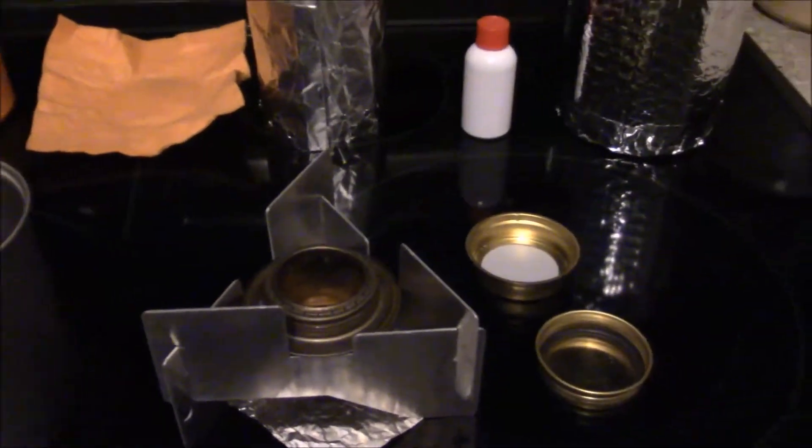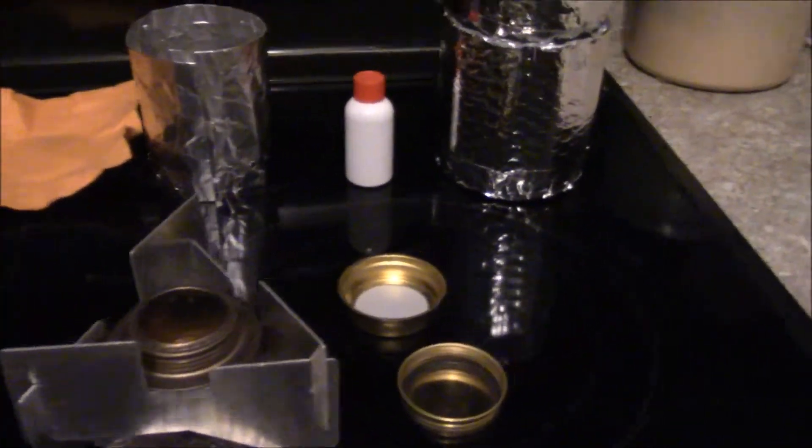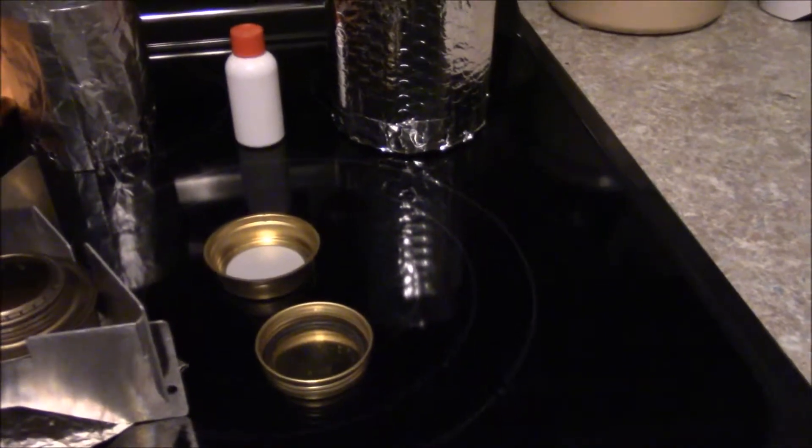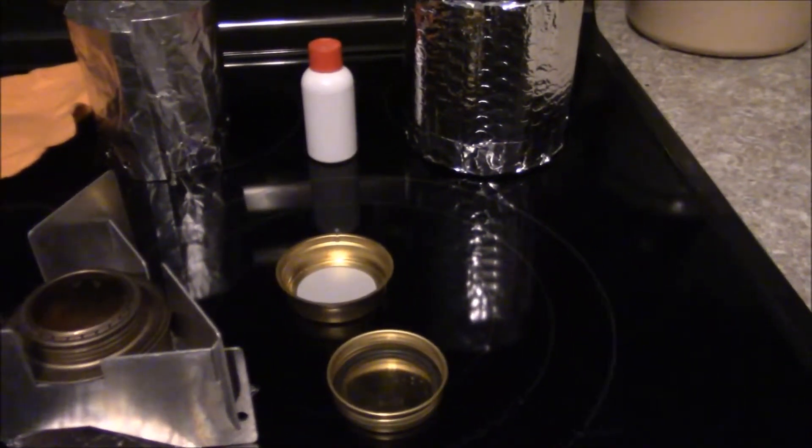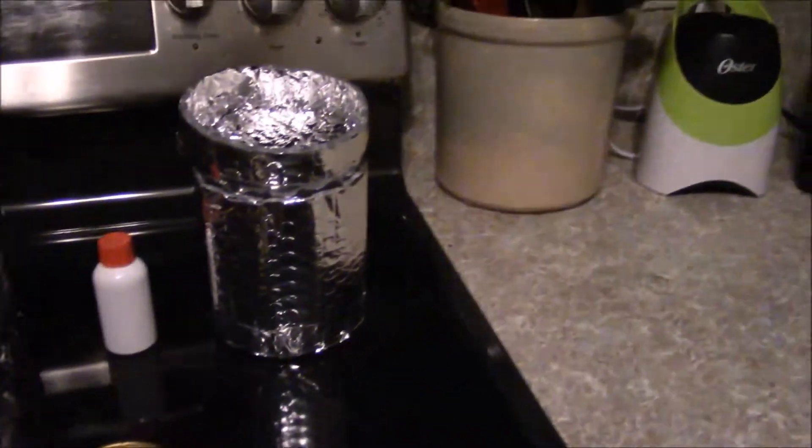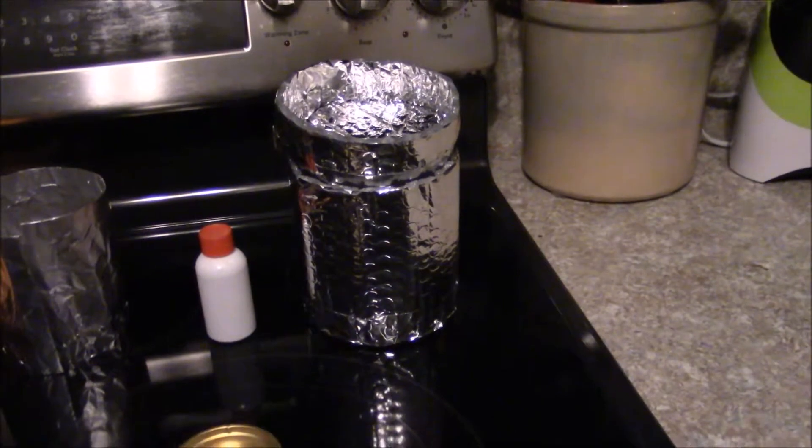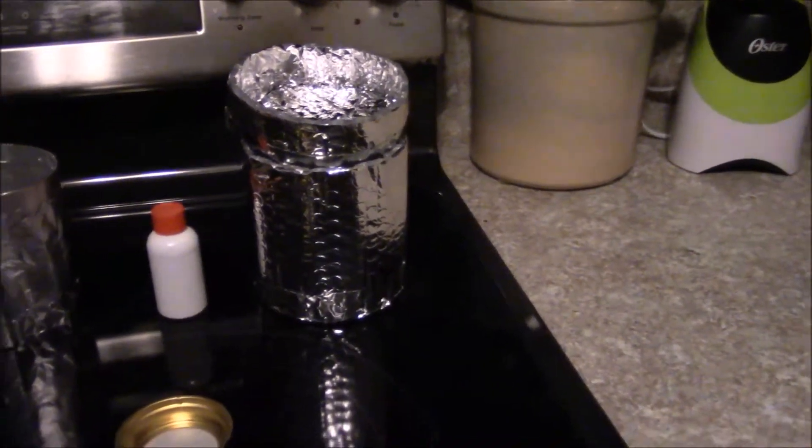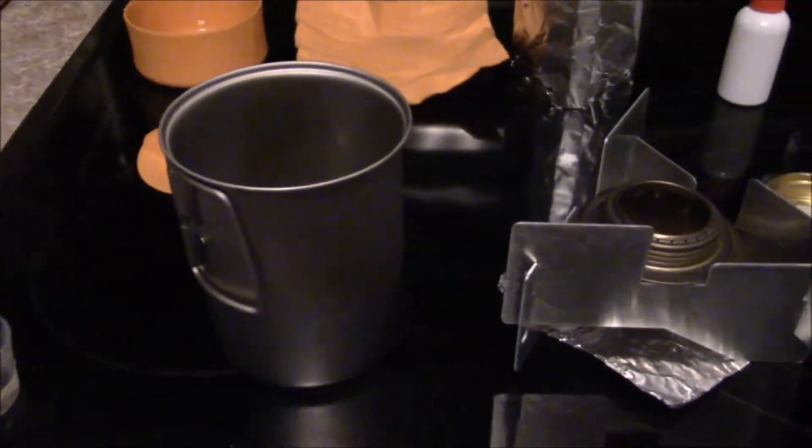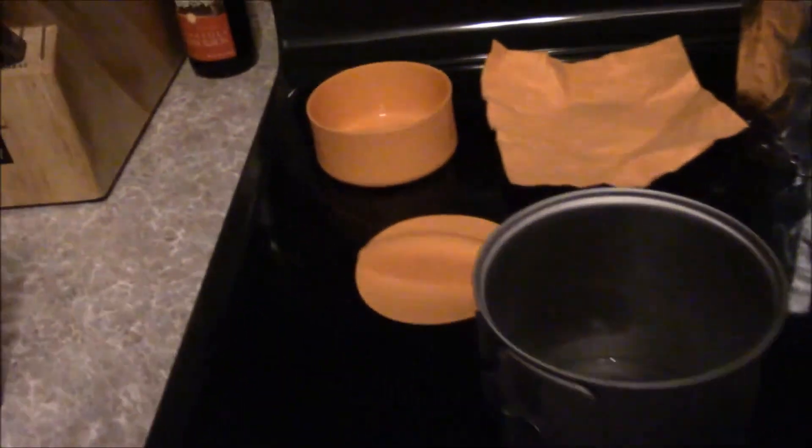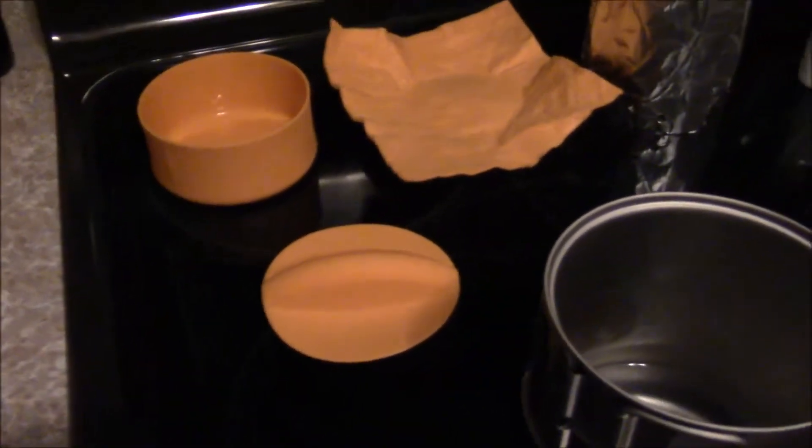The Trangia itself is 66 grams or two and a quarter ounces. The lid is 20 grams or three-quarters of an ounce. The simmering ring, which is also the snuffer, is 26 grams or seven-eighths of an ounce. The pot cozy is also 26 grams, seven-eighths of an ounce, and I made that out of Reflectix. This Snow Peak titanium cup is 86 grams or three ounces. The lid, which is also a pot grab...